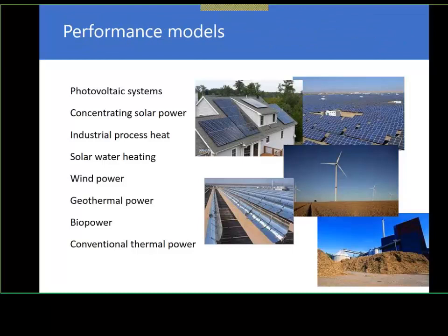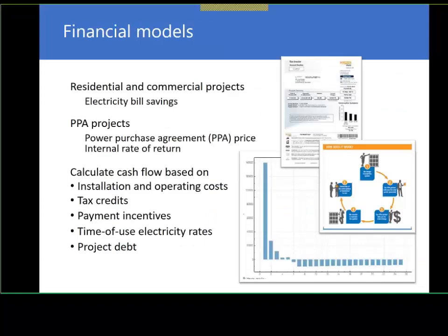SAM doesn't just do PV or photovoltaic systems — it can model parabolic troughs, power towers, solar water heating, and wind power. That's one of the things that makes it powerful for high-level analysis: you can compare a PV system to a wind system and look at which one would work better for your application. It also has several different financial models. It can model distributed energy systems installed on the customer's side of a utility meter — where you use the power to reduce an electricity bill — or PPA projects, which are large power generation projects where you're building the system to sell all of the power to an off-taker through a power purchase agreement.